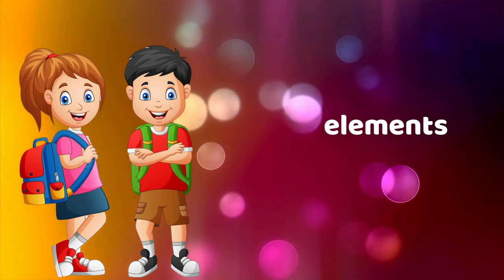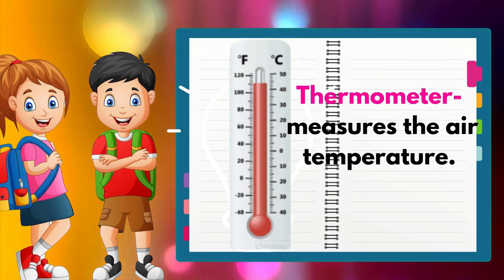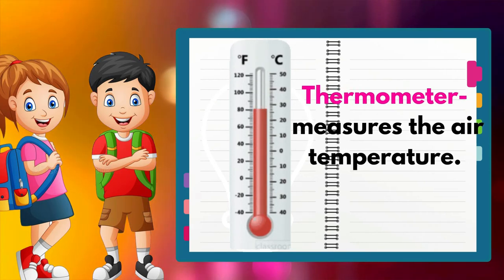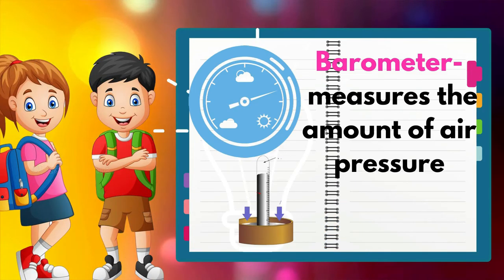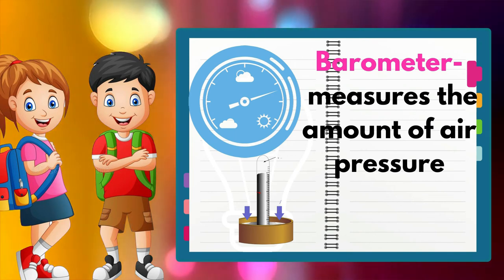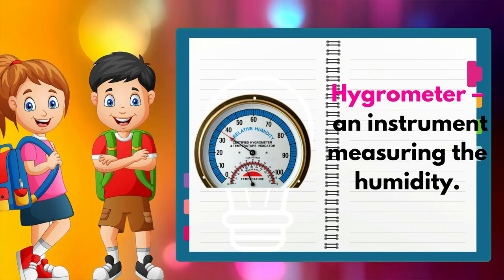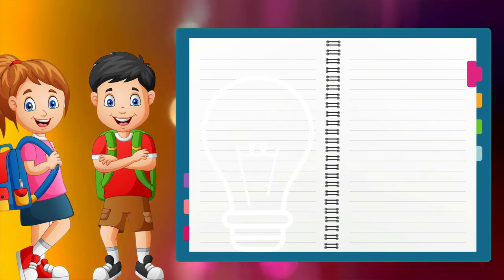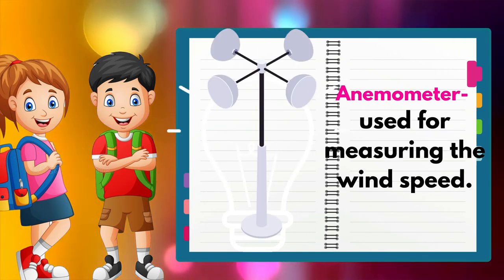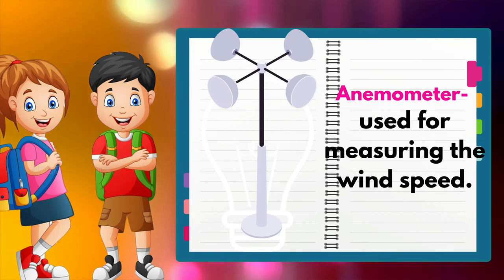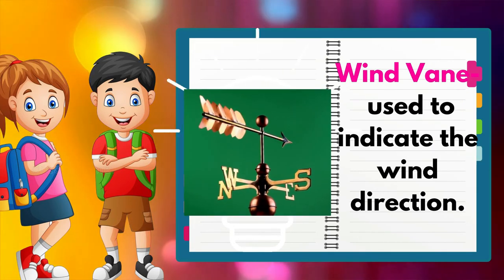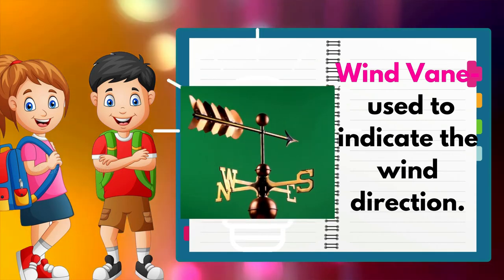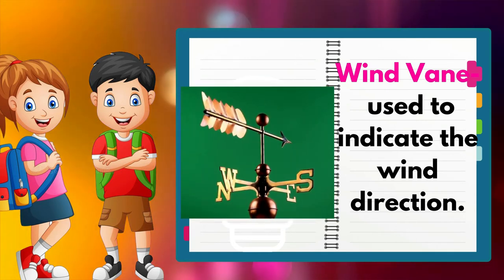There are different weather instruments used to measure weather elements: a thermometer measures air temperature; a barometer measures the amount of air pressure; a hygrometer measures humidity; an anemometer measures wind speed; and a wind vane is used to indicate wind direction.